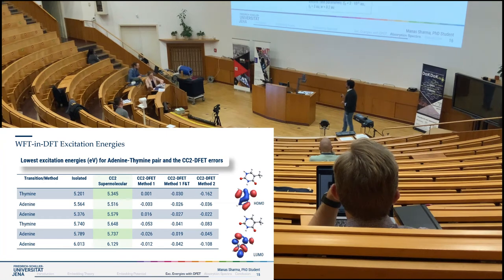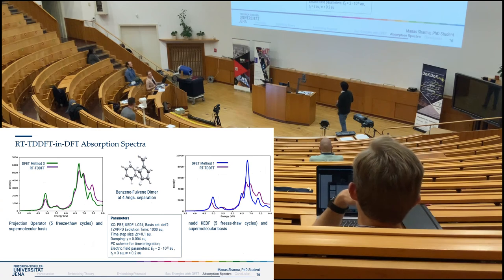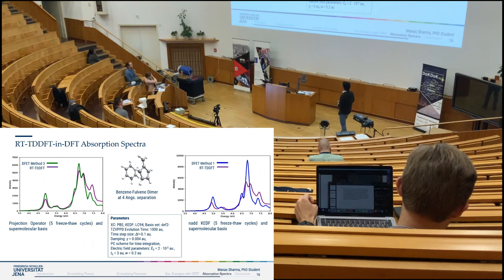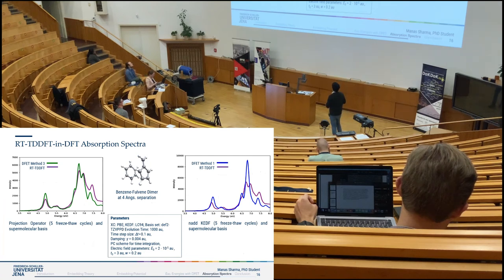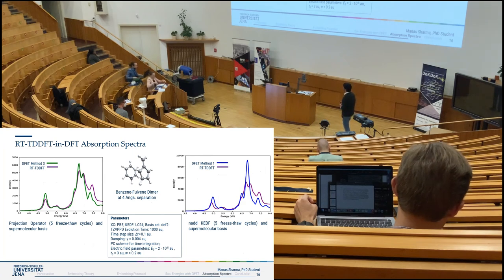Finally, here are some RT-TDDFT absorption spectra results obtained using Method 3, for a benzene dimer at four angstrom separation — one benzene as the cluster, the other as the environment. The green curve shows Method 3, which I described as exact. There are very slight differences because the environment density is held fixed at the ground-state density. Method 3 retrieves the key features of the reference spectrum quite remarkably, while the approximate method does its job but not as well.